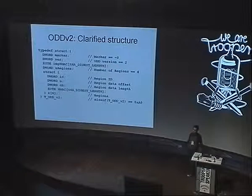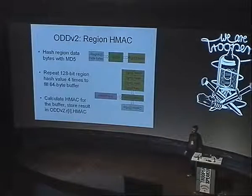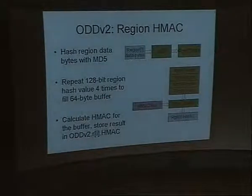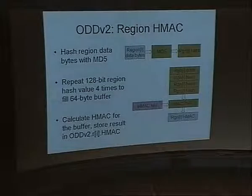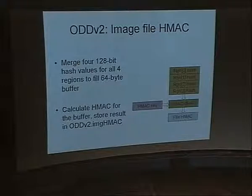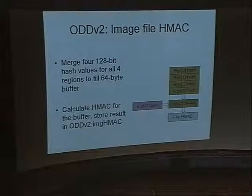Here is how the HMAC for a region is calculated: produce region data bytes with the MD5 hash function, obtain a 16-byte result, repeat it four times, and use HMAC with SHA-1 to obtain the HMAC for the region. For the whole image, get four region hashes from the previous step, merge them together to get 64 bytes, and run the same HMAC function to obtain the file HMAC.